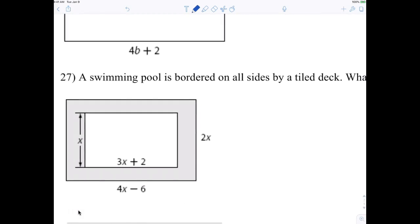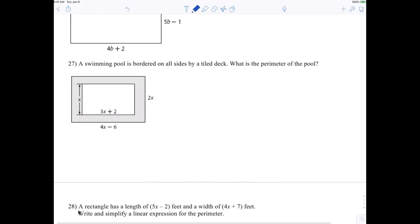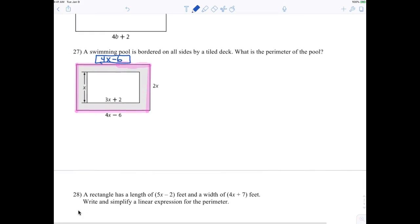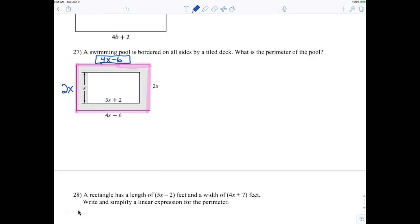All right, let's check out 27. Okay, so 27 it says a swimming pool is bordered on all sides by a tiled deck. What is the perimeter of the pool? All right, so this is what we want. I want this, I think, what they're asking for. So pay attention now so you can see this. All right, I want the perimeter of this. This here, from here to here, from here to here, from here to here. I want the perimeter. So what am I going to do? What's perimeter mean to do? Add up all the sides. Add up all the sides right? So now I want someone to tell me what is this length right here? 4x minus 6. Very nice. 4x minus 6. What's the length on the left side? 2x. All right, so I want someone to find the perimeter for me. What would the perimeter be?